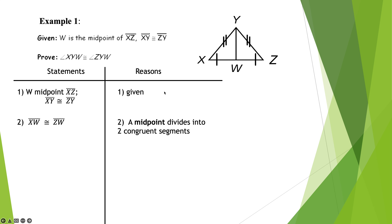I've now used up all the given — all the hash marks are in there. I don't need to reuse XY≅ZY because it's already marked, but I can see a reflexive down the middle. So my next step: YW is congruent to YW by the reflexive property.